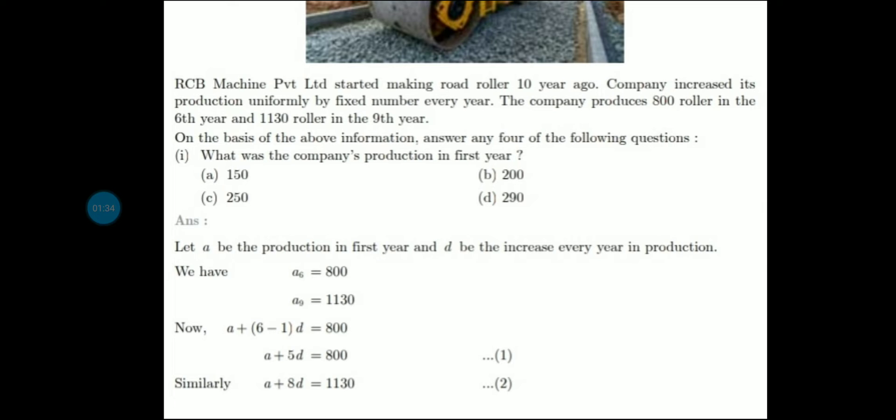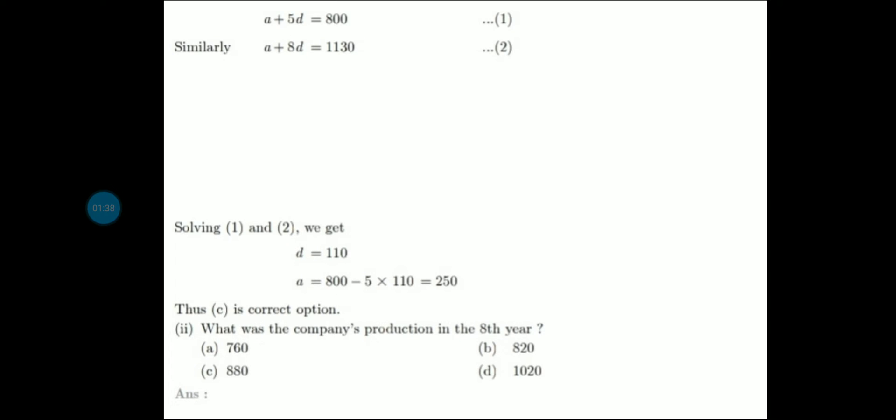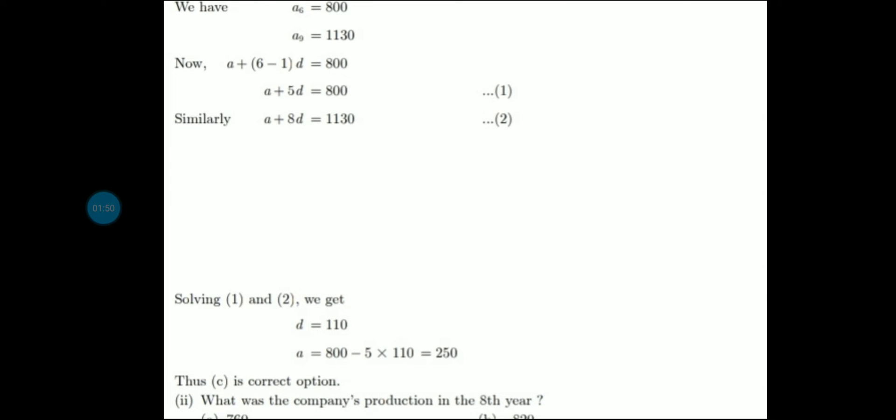Now here you will solve these two linear equations. You will have D value 110 and A value 250. We asked for the production in the first year, so that is A and that is 250. If you have basic knowledge of AP, then you can solve these questions.